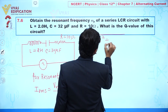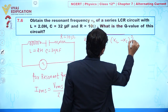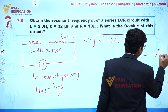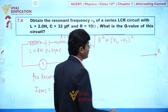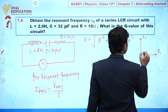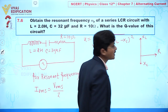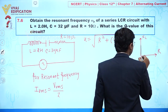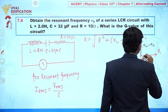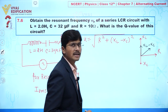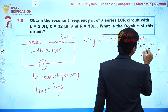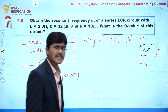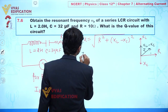For an LCR circuit, the value of Z is given by the square root of R² plus (XL minus XC)². If we draw the impedance triangle, this direction represents R, this direction represents XL, and this direction represents XC. Assuming XL is greater than XC, the net value in this direction is XL minus XC, and the resultant gives us Z.